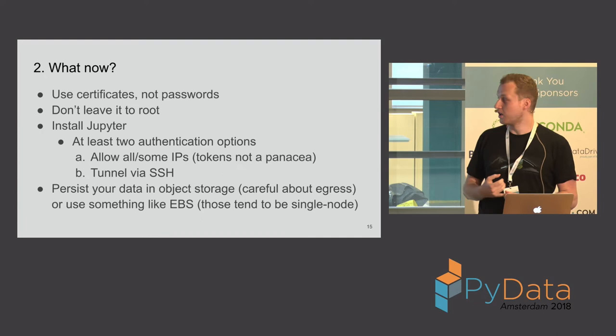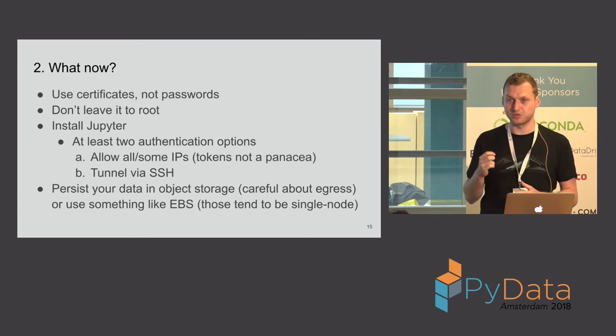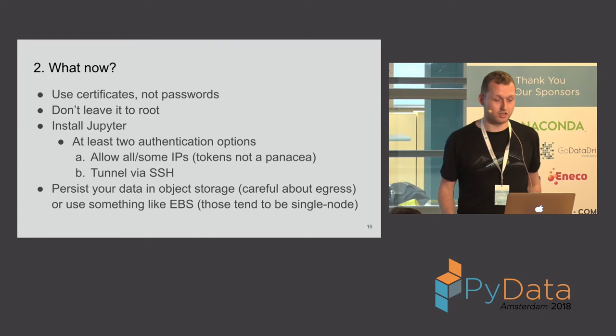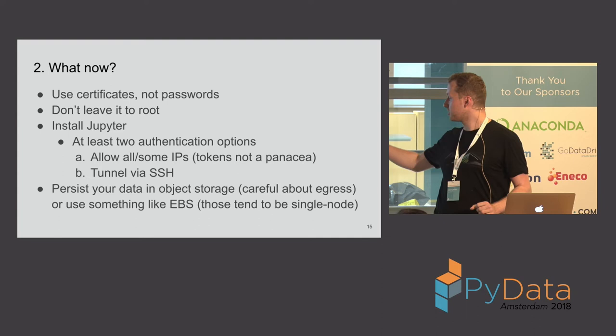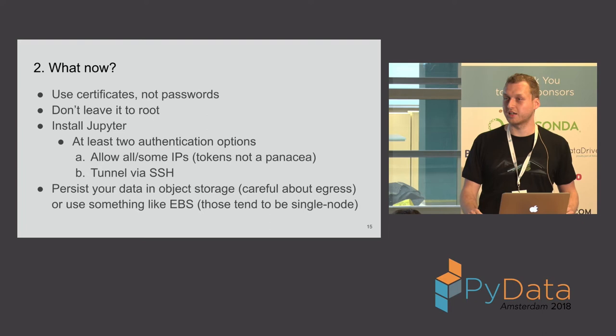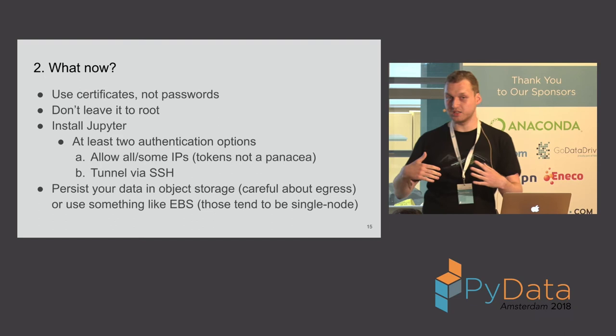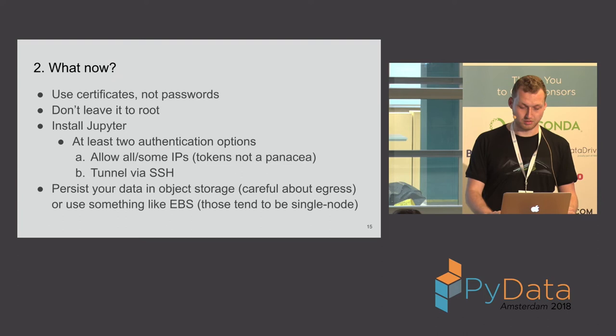Last but not least, you need your data to actually work on. A very good option is object storage — things like S3 or Google Cloud Storage. It's extremely cheap: for a terabyte of storage per month, you pay something like $20, and you can get even cheaper if you don't access it frequently. The only thing to worry about is egress — traffic outside of AWS or your provider — because that can get very expensive very quickly. They usually provide free or cheap traffic within the ecosystem, so if you want to use S3, I'd recommend using EC2s for compute to get free traffic between the two.